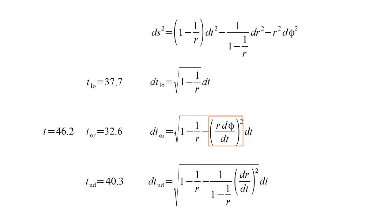Plugging those values in, we get a factor of about 71 percent. Multiplying the bookkeeper's 46.2 seconds by this factor, we obtain the orbiting triplet's 32.6 second clock reading.